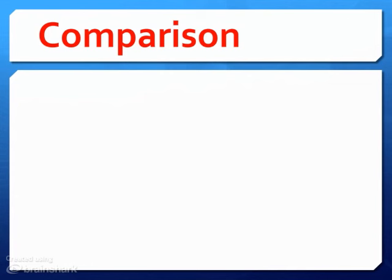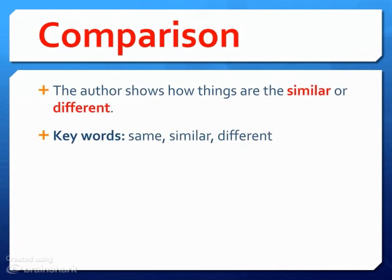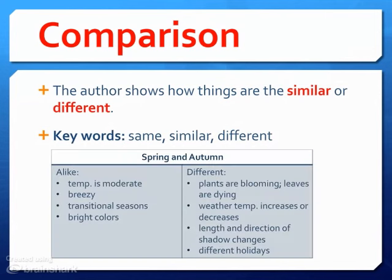The third type of text structure is comparison. This is when the author shows how things are similar or different. Some key words are same, similar, or different. For example, comparing spring and autumn, they are alike because the temperature is moderate, it's breezy, it's a transitional season, and there are bright colors. They're different in that plants are blooming versus leaves are dying, the weather temperature is either increasing or decreasing, the length and direction of shadows changes depending on the season, and there are different holidays. This shows how they are similar and how they are different, which is an example of a comparison text structure.